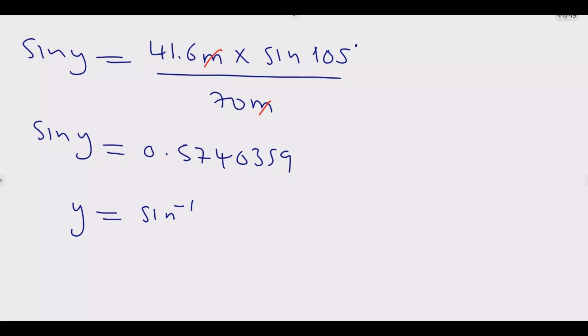Sine Y equals 41.6 meters times sine 105 degrees over 70 meters. The meters cancel. Simplifying this, using the calculator, sine Y equals 0.5740359. Then Y equals sine inverse 0.5740359, which gives us 35.032145. So Y equals 35 degrees.